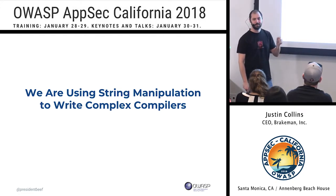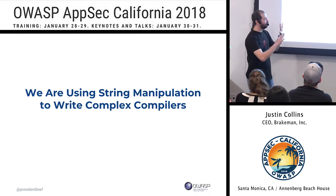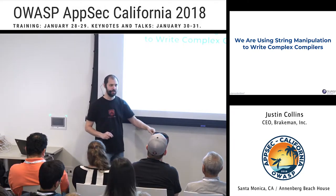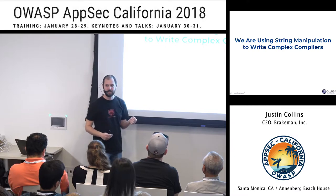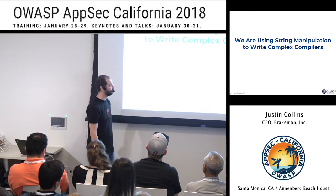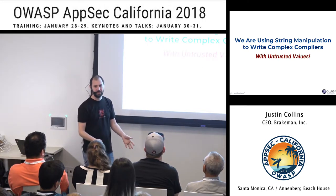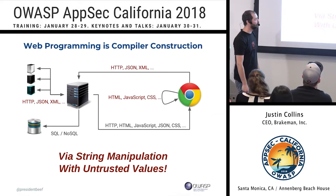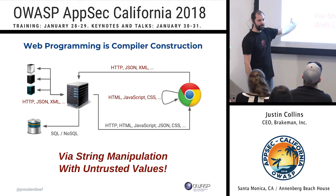But that is what you do when you write a web application. You're building a complex compiler and most likely doing it all via string manipulation — templates, queries sent to the database, it's all strings. We're doing it with untrusted values. That seems like a great way to get vulnerabilities, and it is — that's why injection is at the top. We're building these complex systems using string manipulation with untrusted values.